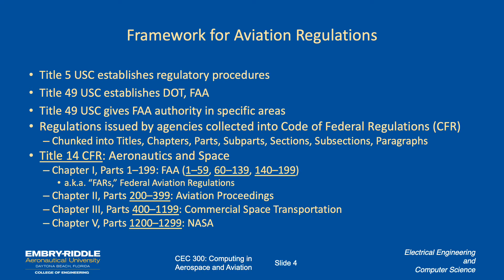The FAA and the Department of Transportation are established under Title 49 of the United States Code, which also gives the FAA authority to regulate using the regulatory procedures in Title V. The regulations issued by the various agencies of the federal government are collected into what's called the Code of Federal Regulations, CFR. Title 14 of the CFR is about aeronautics and space, and Chapter 1 — parts one through 199 — concerns the FAA. These are called the FARs or Federal Aviation Regulations, though in federal legalese, FAR now means Federal Accounting Regulations, so legally you can't say FARs. Parts 200–399 cover FAA and Department of Transportation proceedings, 400–1200 is commercial space transport, and 1200–1299 is NASA.